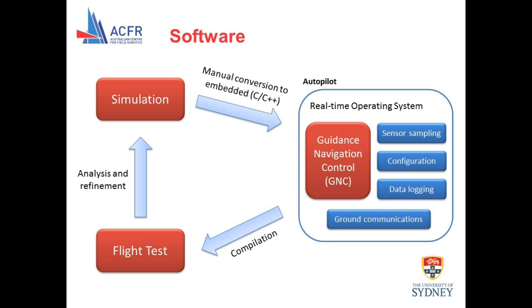The same cannot be said, however, for the heart of SkyMaster: the guidance, navigation, and control, or GNC module. Here, development requires iterative field testing, analysis, and refinement. This process generally consists of implementing the GNC algorithms in simulation, converting them to an embedded language, compiling them with the autopilot software, and then testing. The main bottleneck is the manual conversion from high-level simulation to an embedded language — a slow, difficult process that often induces errors which don't show up until the flight testing phase. When developing complex aerial systems, problems here can be the difference between success and failure.